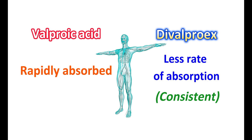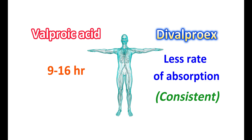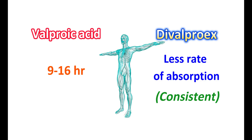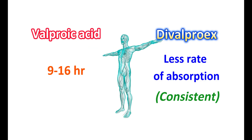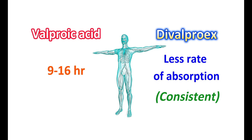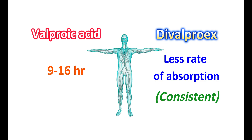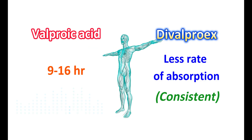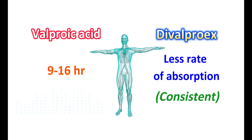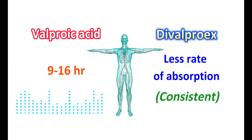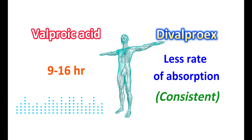Valproic acid has a half-life of around 9 to 16 hours, which is somewhat similar to divalproex sodium. However, divalproex produces stable plasma concentrations of valproic acid due to its regular rate of absorption. On the other hand, valproic acid can show peaks and troughs, so its plasma levels are not consistent due to its rapid absorption.